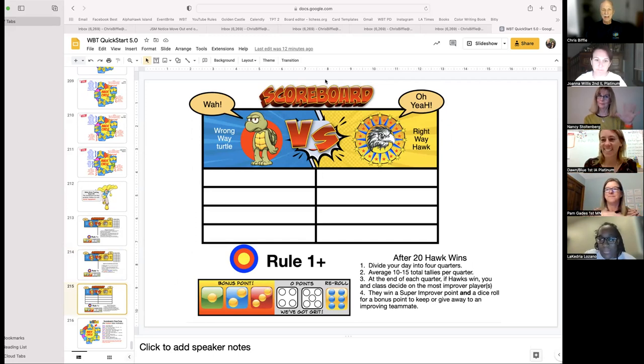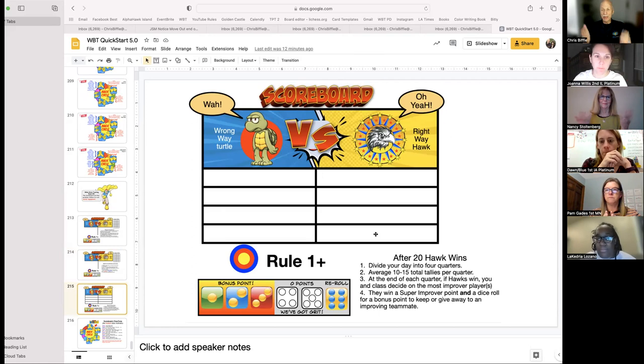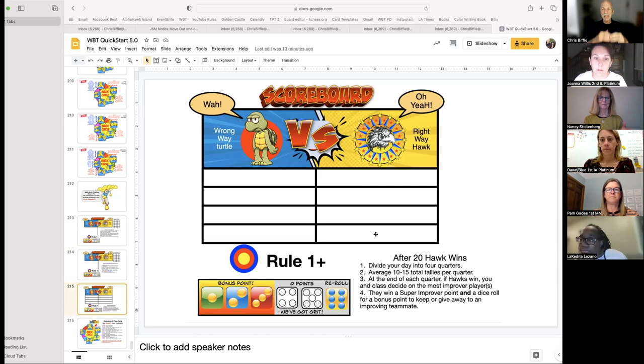Divide your day into four quarters, and if the Hawks are ahead at the end of a quarter, you and the class decide what players improve the most. Give them a super improver star and a dice roll. I'll say that again. Divide your day into four quarters. At the end of each quarter, see who's ahead, and half the time, the turtles will be ahead. But if the Hawks win, everyone decides who improves the most. That's what we're talking about, and that kid or kids get a dice roll. They get a super improver point and a bonus point they can keep or give away to an improving teammate. Nancy, explain the four-quarter scoreboard that we're playing alongside super improver.